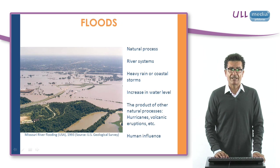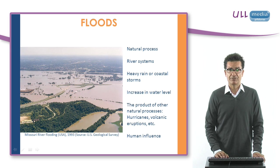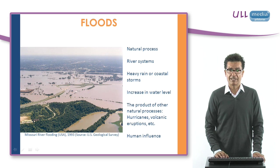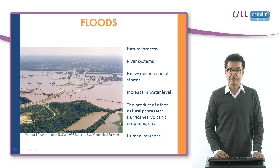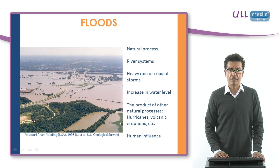Floods are caused by a sudden change in water level, so the water level exceeds its natural confinement and covers a portion of land not previously covered. This is a natural process that occurs in river systems on a regular basis by the melting of snow, heavy rain or coastal storms, which can cause an increase in water level over a coastal plain. These causes are often the product of other natural processes such as hurricanes and tropical storms accompanied by heavy rains, volcanic eruptions capable of melting snow suddenly, and so on. Apart from natural processes, human influence is in many cases also a cause of floods.